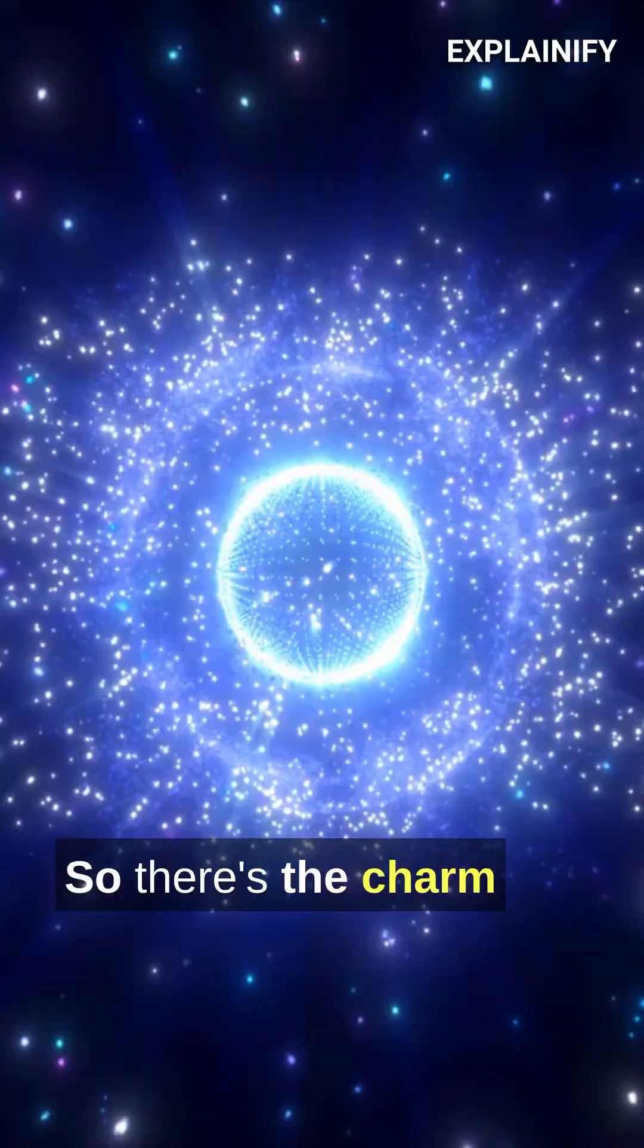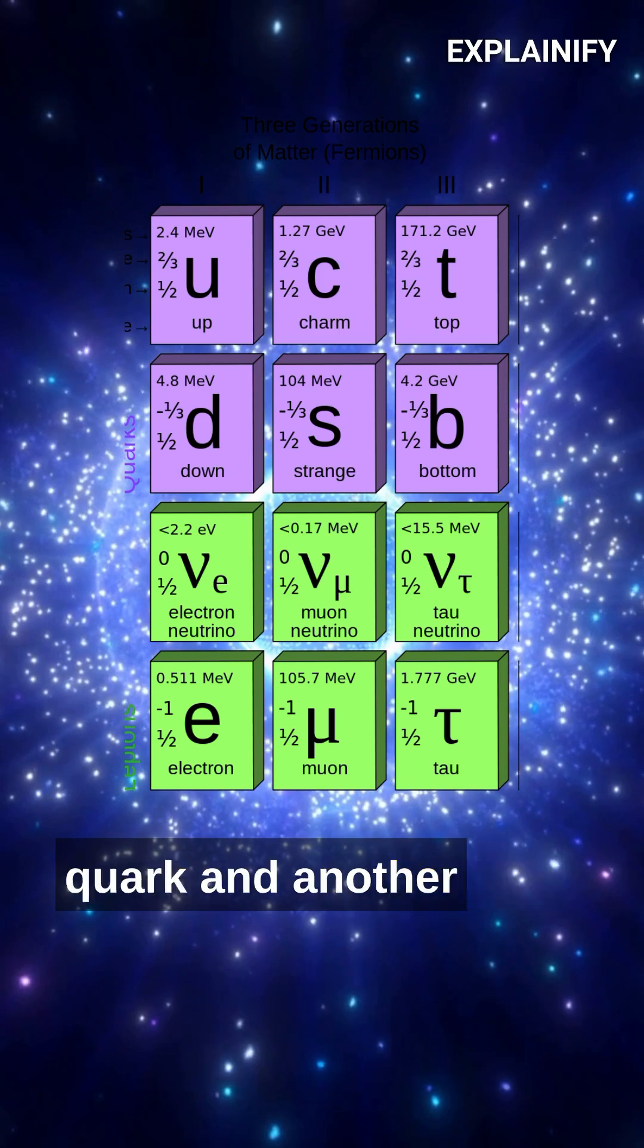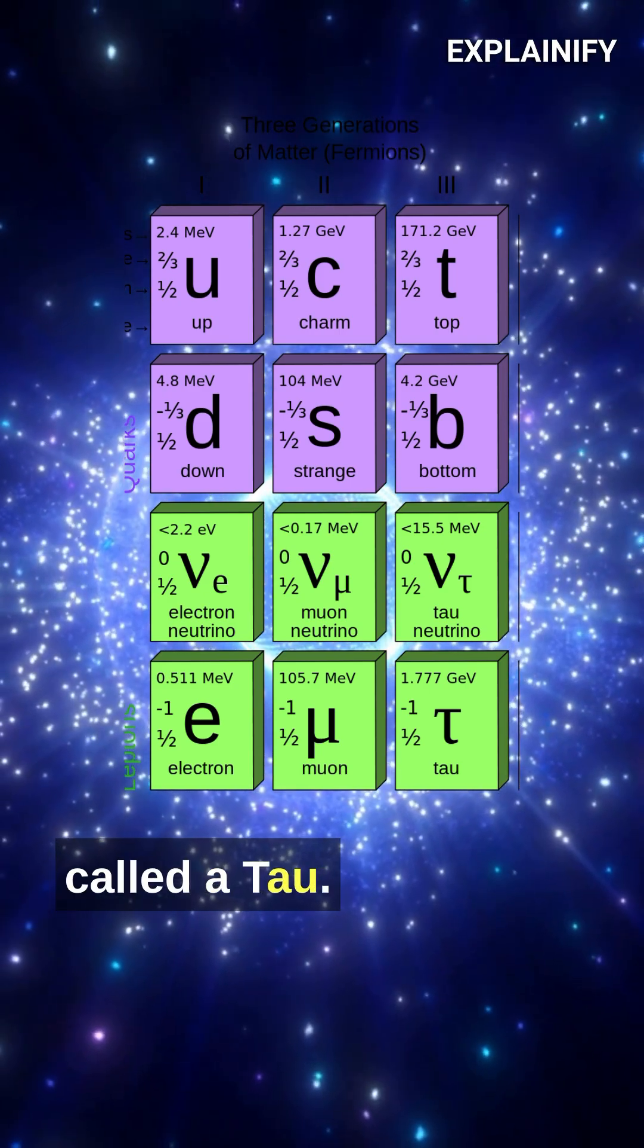There's the charm and the strange quark and a heavy electron called a muon, and then there's the top and the bottom quark and another heavy electron called a tau. And that's it.